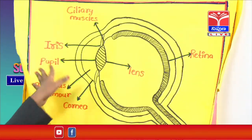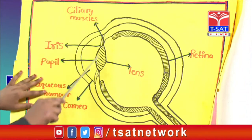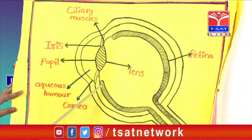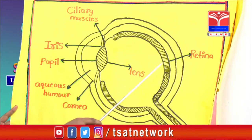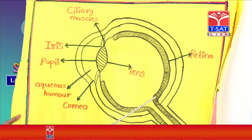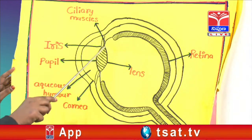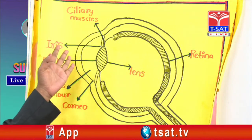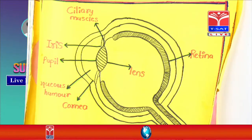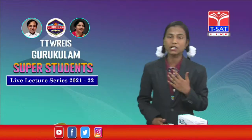The lens in the middle is hard, but soft towards the outer edges. The distance between the lens and the retina is 2.5 centimeters. Next, ciliary muscles — these ciliary muscles help our lenses adjust the focal length equal to the radius of curvature.